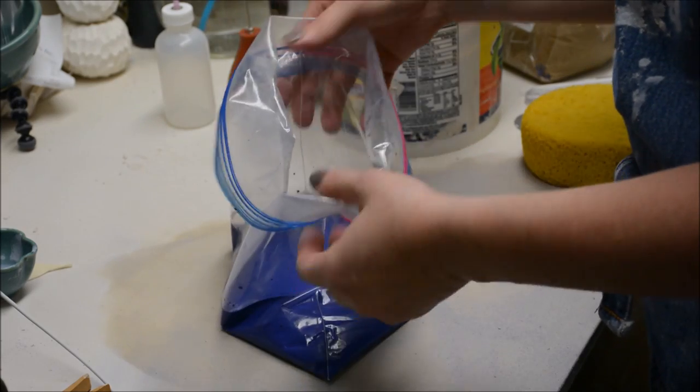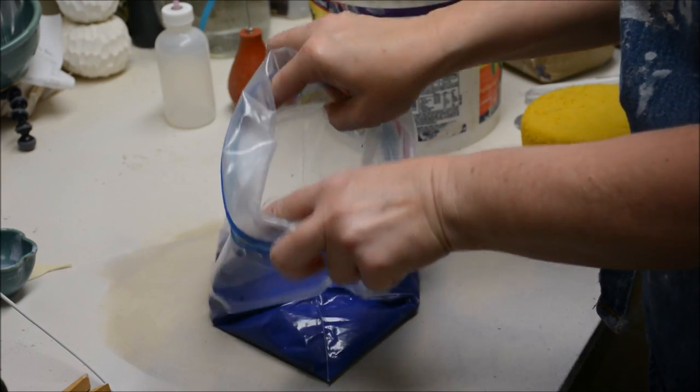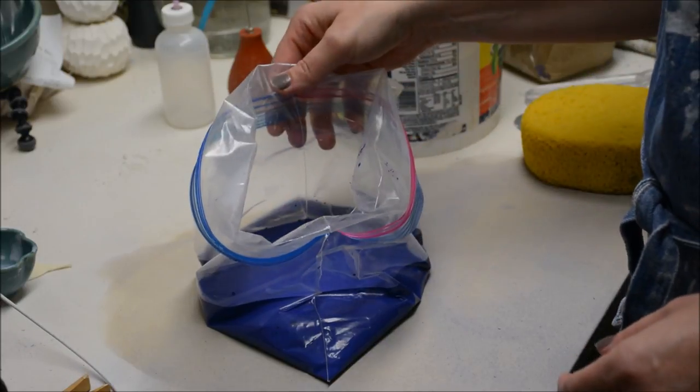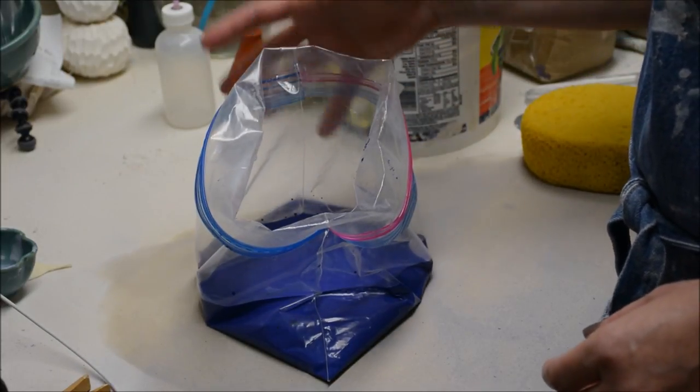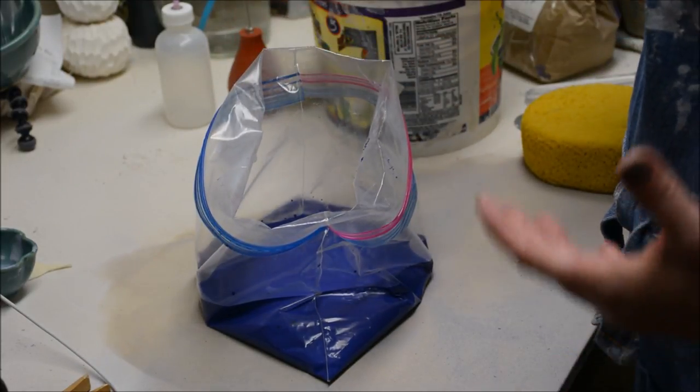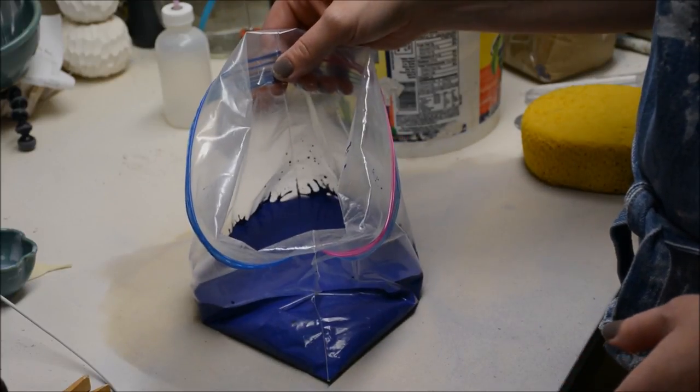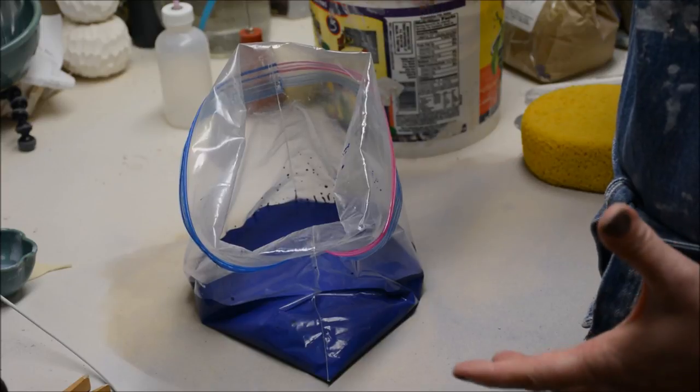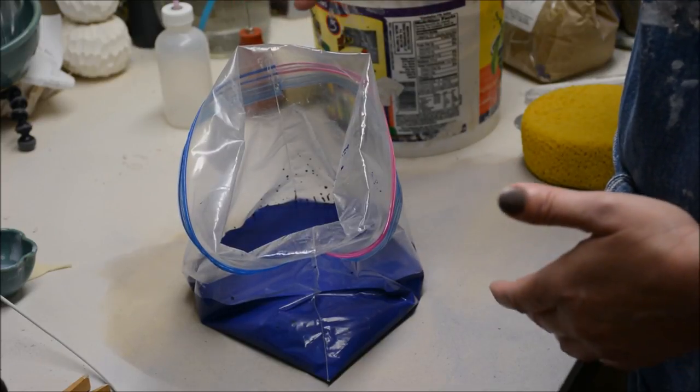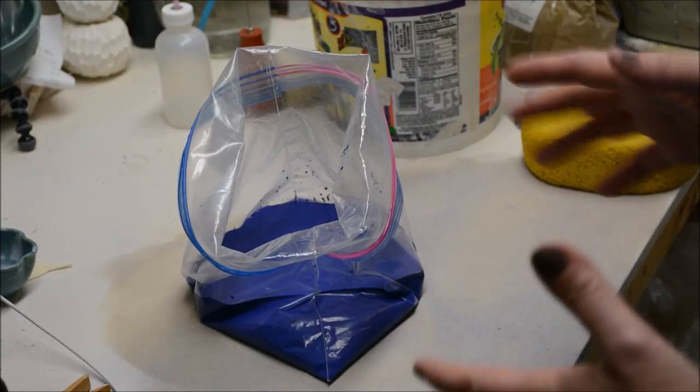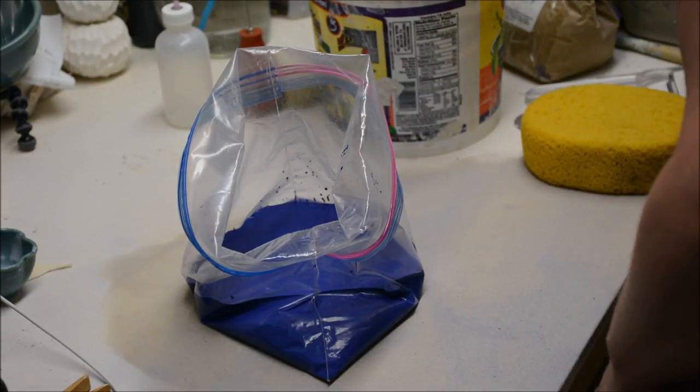Now at this point, there are different things that you can do to get this to a usable state if you're going to be coloring a clay body. If I get it to a wedgeable state, that is the easiest way to incorporate it into clay. When it's just slippy or pasty like this, sometimes you can wedge it in, but I will say that's very messy. And I'm not in that much of a hurry.